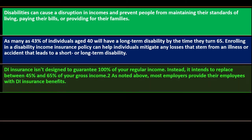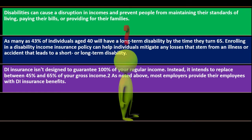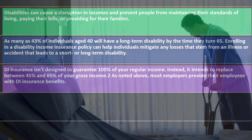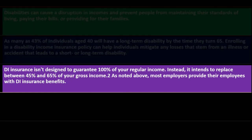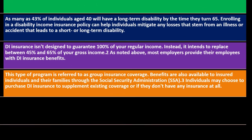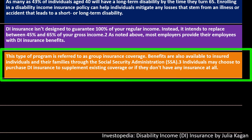DI insurance isn't designed to guarantee 100 percent of your regular income. Instead, it intends to replace between 45 percent and 65 percent of your gross income. Most employers provide their employees with DI disability insurance benefits, referred to as group insurance coverage. Benefits are also available through the Social Security Administration (SSA). Individuals may choose to purchase DI insurance to supplement existing coverage or if they don't have any insurance at all.